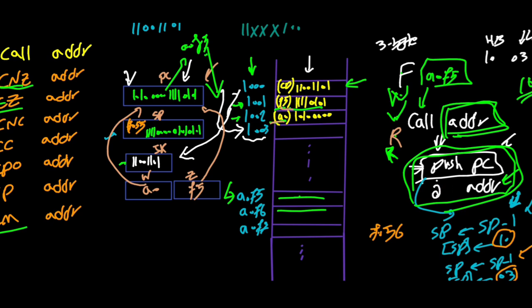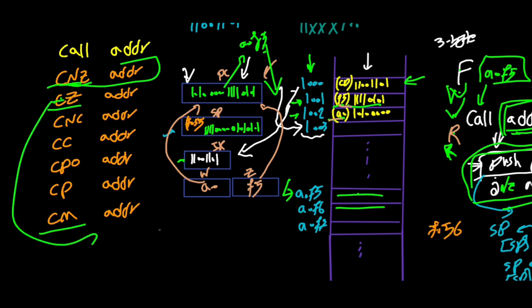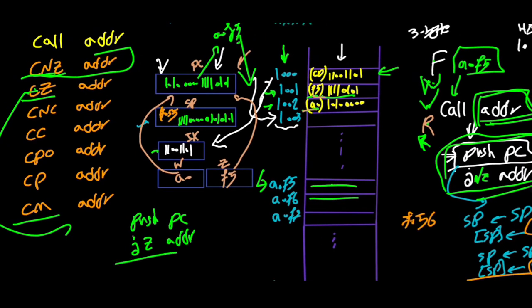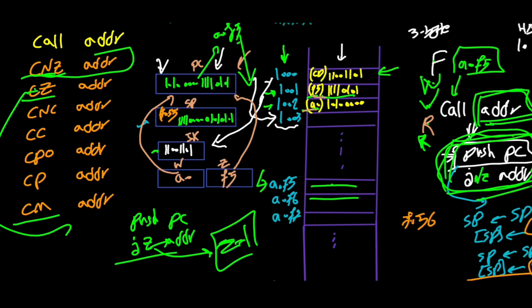What about the other conditional CALL instructions — CNZ, CZ, CNC, CC, CPO, CPE, CP, CM? They are exactly like the conditional JUMP instructions explained previously. For example, CNZ addr is PUSH PC then JNZ addr; for CZ it's PUSH PC then JZ addr. JZ checks the zero flag — if the zero flag is set, meaning the result was zero, the jump happens. All of these conditional calls work the same way: PUSH PC followed by the corresponding conditional JUMP.